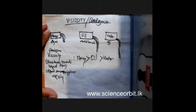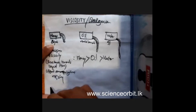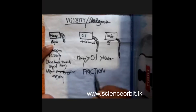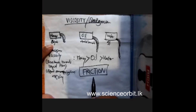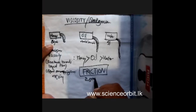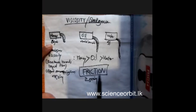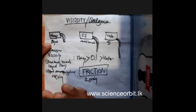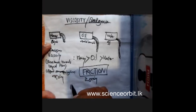What happens actually here is related to what we've learned about friction in mechanics. Normally friction is between two solid surfaces — it is a resistive force. Similarly, when it comes to liquid layers, or between a liquid surface and a solid surface, the resistive force acting there is what we call viscous force.